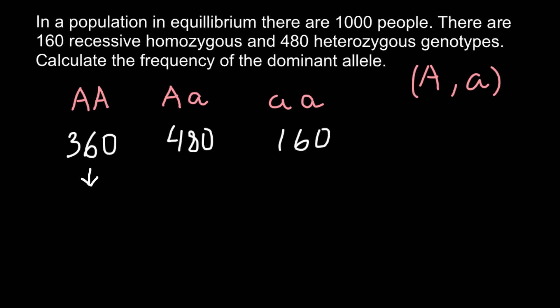This is going to be 720. Here we have 480 individuals, each of whom also has two alleles, one dominant and one recessive, so the total number of alleles here would be 960. And here we have 160 individuals, each with two recessive alleles.